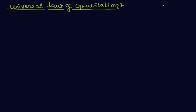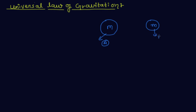Now I discuss the universal law of gravitation. I take two objects. The mass of the bigger object is capital M and the mass of the smaller object is small m. This object is A and this object is B. The distance between these two objects is small r.